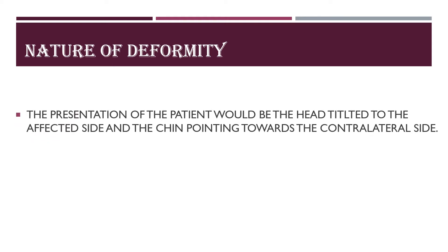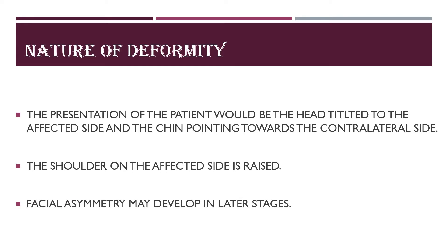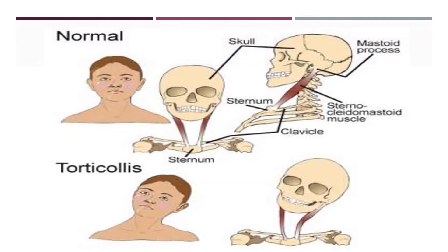Nature of deformity - how does a patient with torticollis present? The head is tilted to the affected side and the chin points towards the contralateral side. The shoulder on the affected side is raised, and there is facial asymmetry which may develop in later stages. As seen in the picture, this is a normal presentation compared to the torticollis presentation, where the shoulder is slightly raised on the affected side.